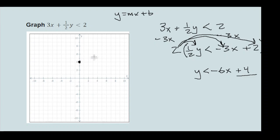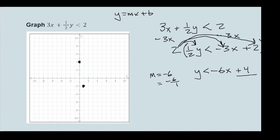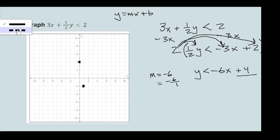We have positive 4 as the y-intercept, so we go up to positive 4 and put a dot there. The slope is negative 6, which means negative 6 over 1 — we go down 1, 2, 3, 4, 5, 6 units and then over 1, and put a dot right there. Then we draw a dashed line through those points.